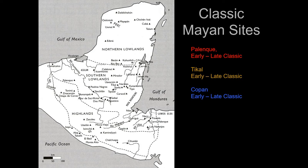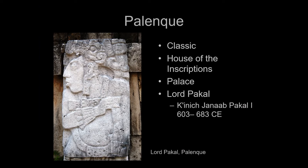We're going to talk about a few classic Mayan sites to give a flavor of this. We'll concentrate on three: Palenque, which is an early to late classic site; Tikal, a really important classic site; and Copán, which is a little bit later. Palenque is in modern-day Mexico and is famous for its palace and also for the House of Inscriptions — a temple that served as the tomb of Lord Pakal, K'inich Janaab' Pakal I.